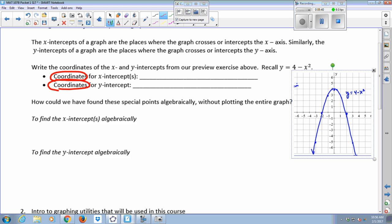So what are the coordinates for the x-intercepts? Two zero and negative two zero. And visually, their spots are right there on the graph. And what's the y-intercept here? Zero four, right? And that occurs right here, zero four.